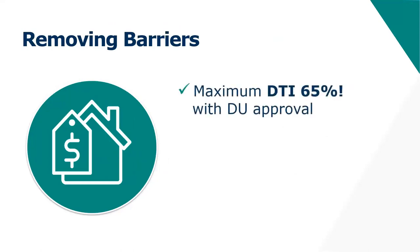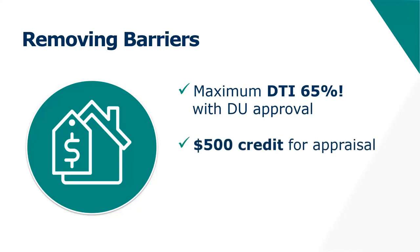So how does this program remove barriers? First, the max DTI goes to 65 with DU approval — you usually do not get an approval at 65 DTI, so that's a key barrier being removed. Additionally, there's a $500 credit for appraisal if an appraisal is required on the transaction. We are seeing a lot of PIWs on this program, so you may not need an appraisal, but if one is required, every borrower gets the flat $500 credit, no matter the appraisal cost.